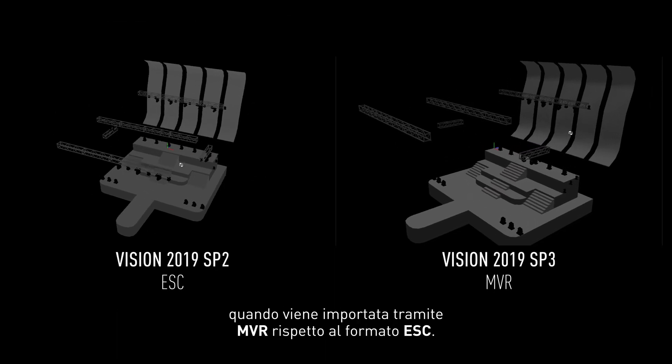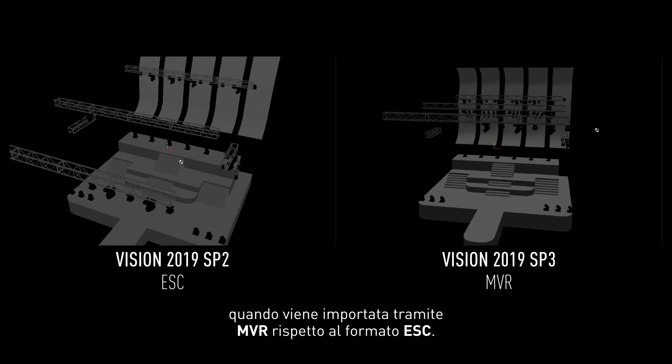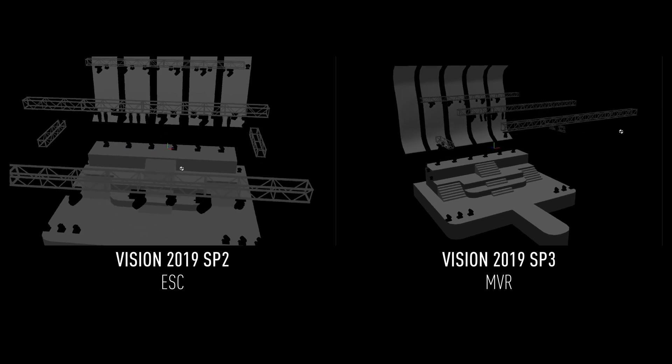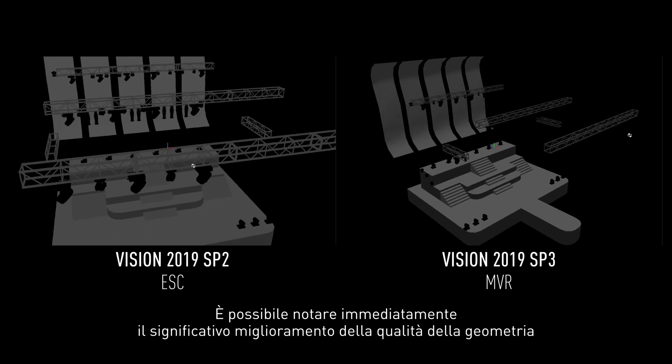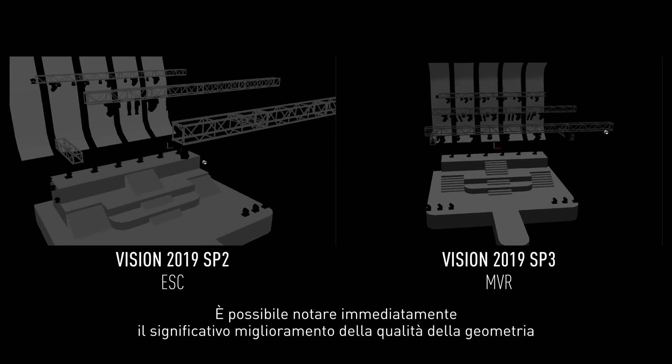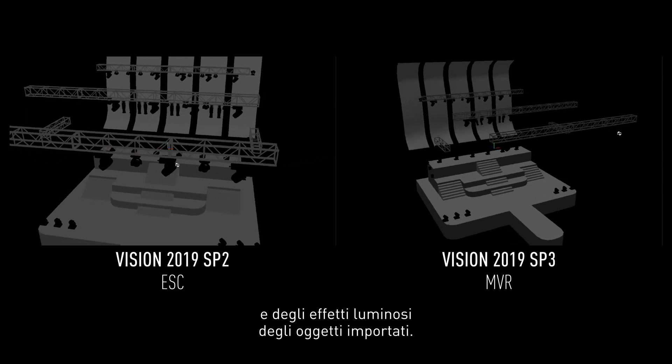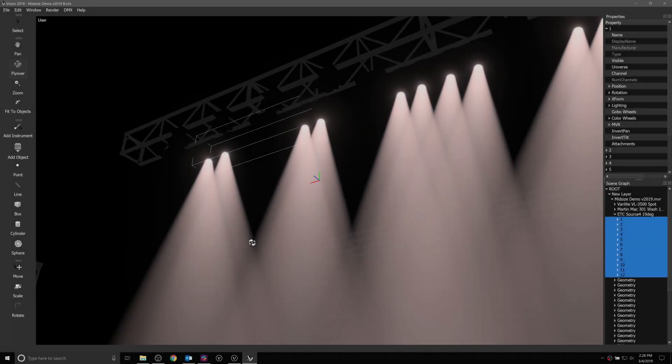The next and likely most obvious change is to the appearance of 3D geometry when imported via MVR versus ESC. You can see the significant improvement in the quality of both geometry and light effects of imported objects immediately.